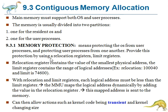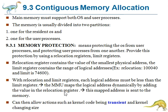We can provide this protection by using relocation registers and limit registers. The relocation register contains the value of the smallest physical address, and the limit register contains the range of logical addresses. Each logical address provided by the CPU must be less than the limit register. The memory management unit maps the logical address dynamically by adding the value in the relocation register.